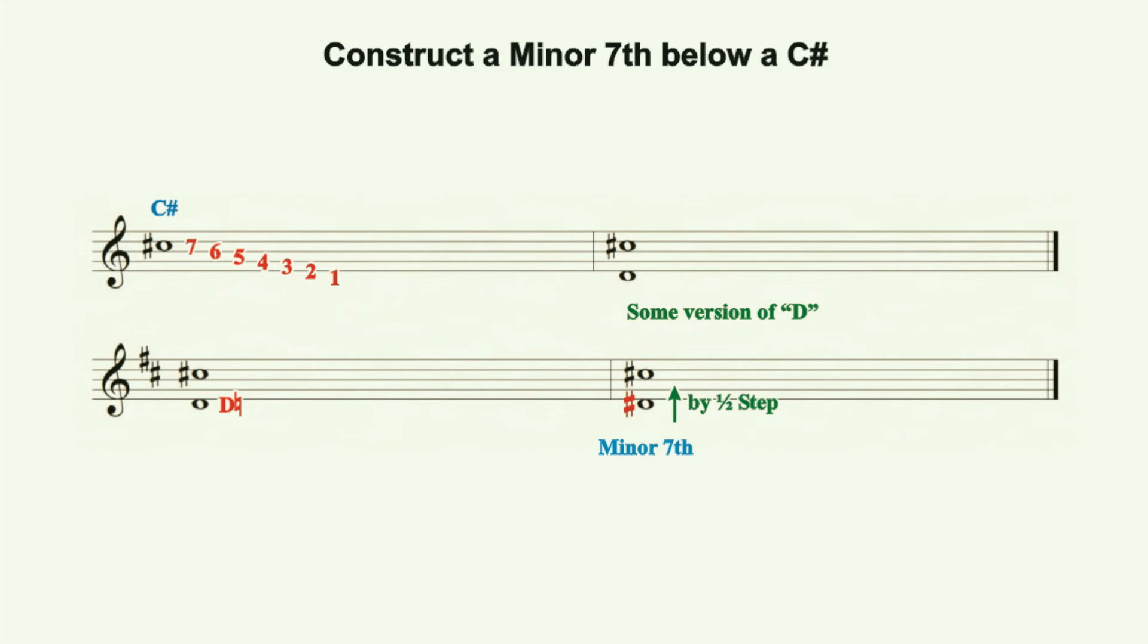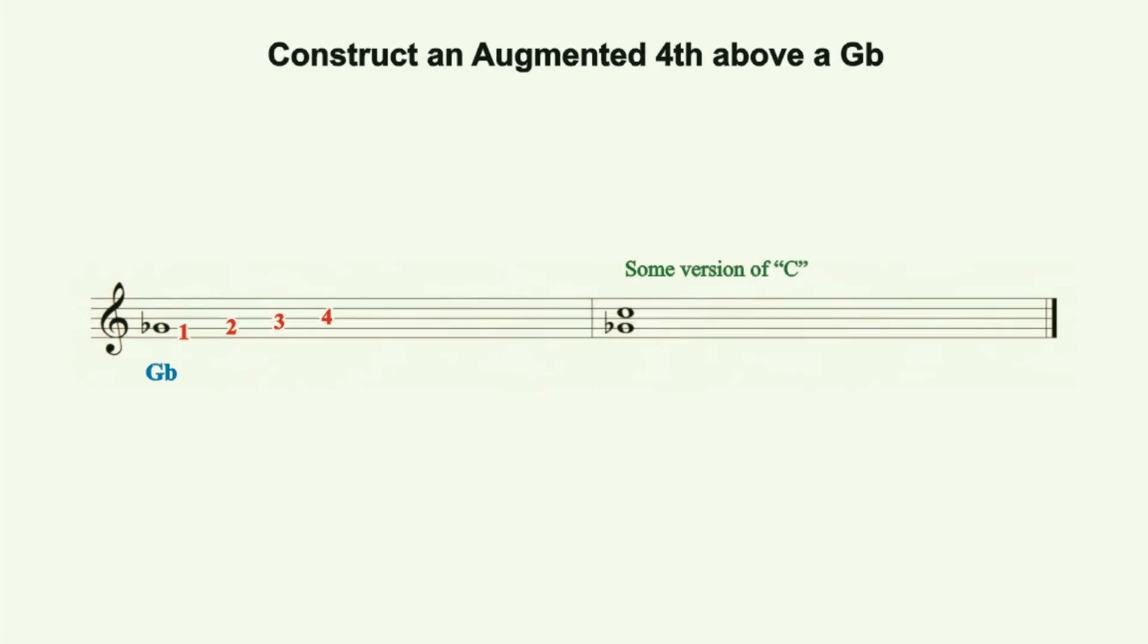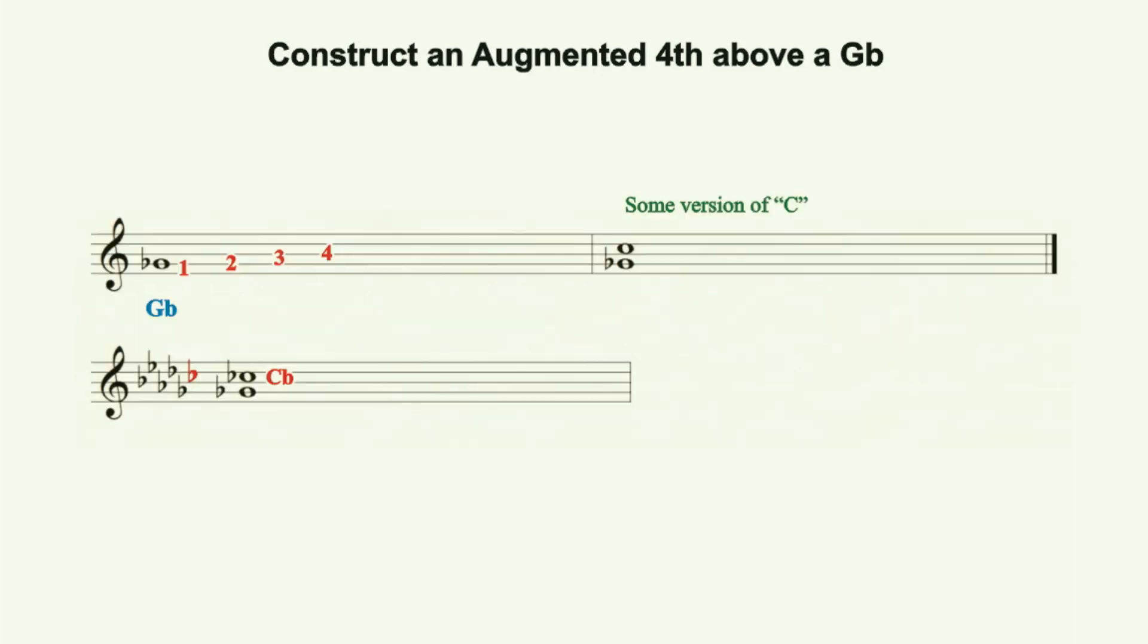Construct an augmented 4th over a G flat. Notate the G flat where desired. Counting G flat as 1, count upward 4 lines and spaces. Our 4th will be some version of C. The key signature for G flat major tells us that the diatonic version of C is a C flat. The diatonic 4th is, of course, a perfect 4th. In order to change the diatonic perfect 4th to an augmented 4th, we need to increase the C's pitch by one half step to a C natural.